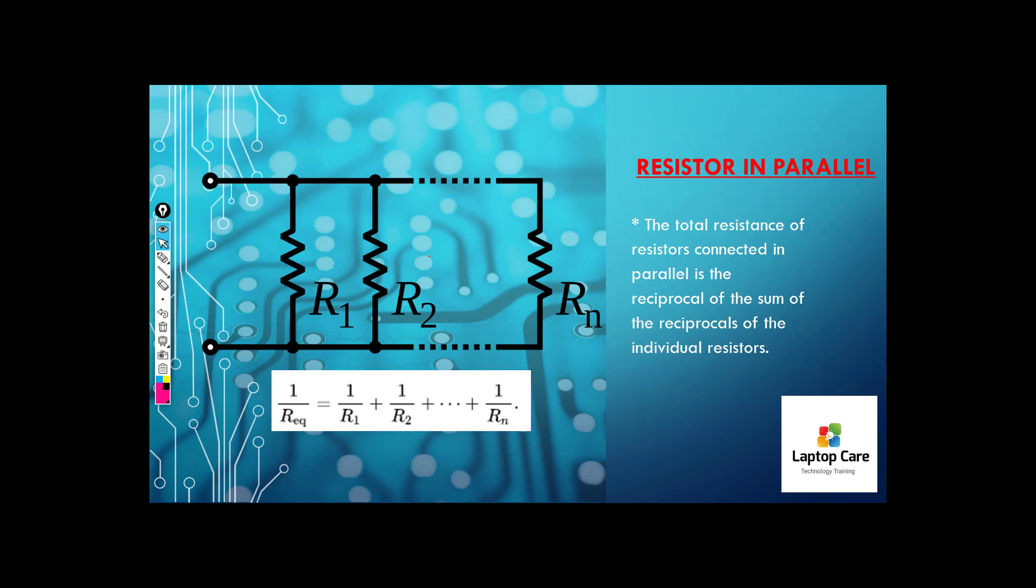We can also place the resistor in parallel. So the overall actual resistance is measured here in two points, here and here. It is reciprocal, whatever the value of the resistance will be divided. So total resistance will be calculated by this formula. 1 upon required resistor or equivalent resistor is equal to 1 upon R1 plus 1 upon R2 plus however many resistors you have. N number of resistor is possible. So value is reduced in parallel circuit and in series circuit value is increased.